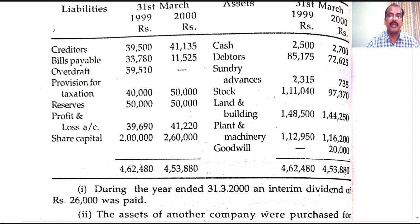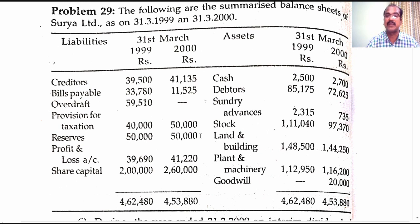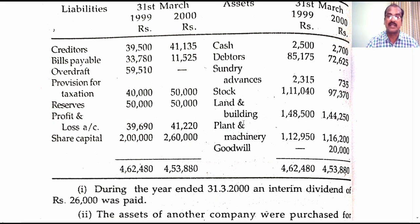Profit and loss account — opening and closing balances are given. Share capital — there is an increase of 60,000 rupees in the value of share capital. We will see what is the reason for the increase in the value of share capital. Cash, debtors, sundry advances, stock — these four items are current assets and will be taken over to the schedule of changes in working capital. Land and building is a fixed asset. Plant and machinery is a fixed asset. Goodwill — you find there is an increase in the value of goodwill amounting to 20,000. We will come to know the reason for the increase in the value of goodwill after analyzing the additional information given in the problem.